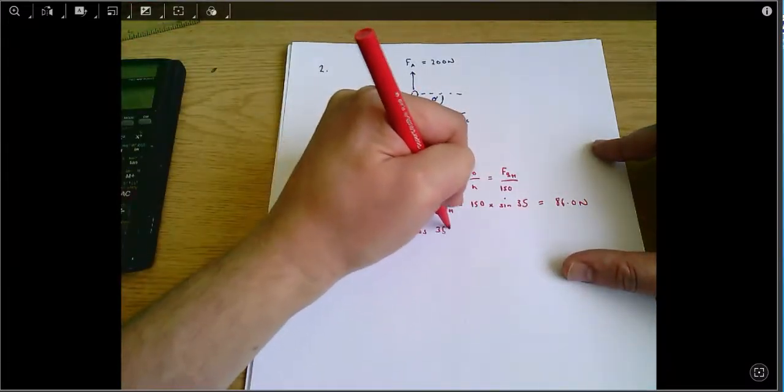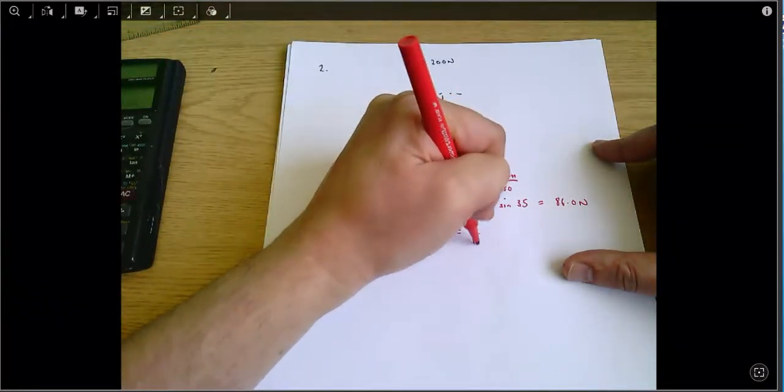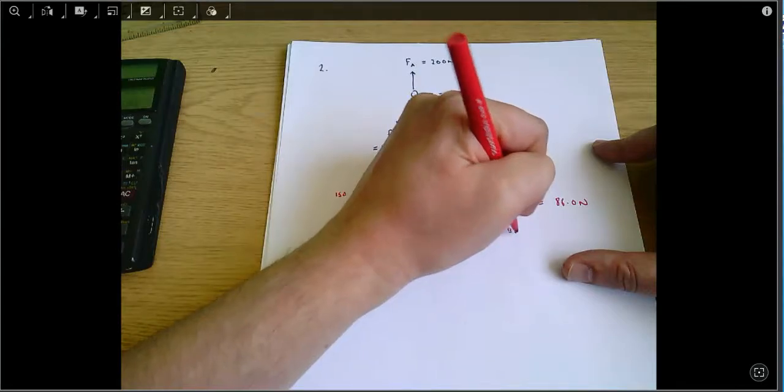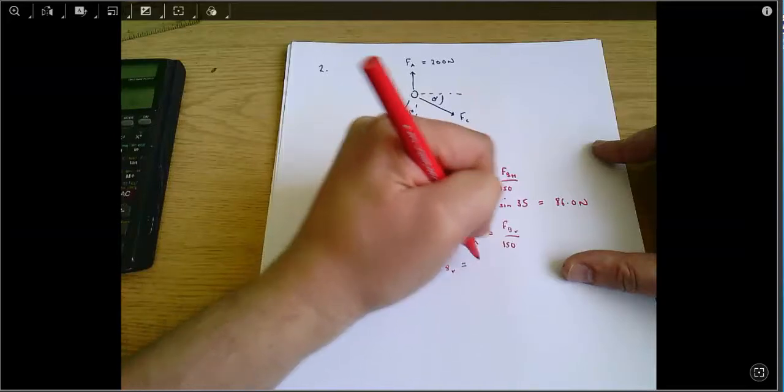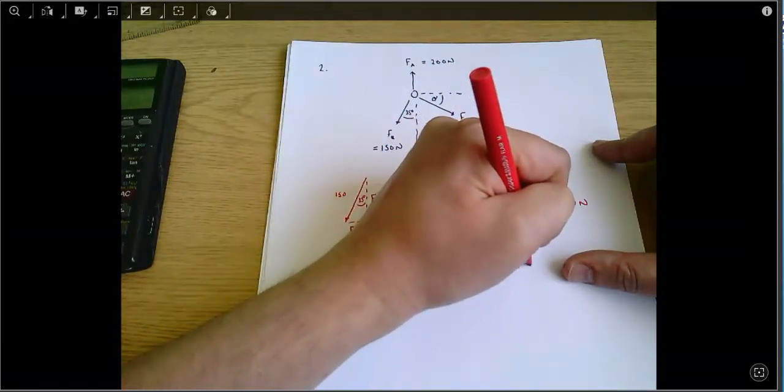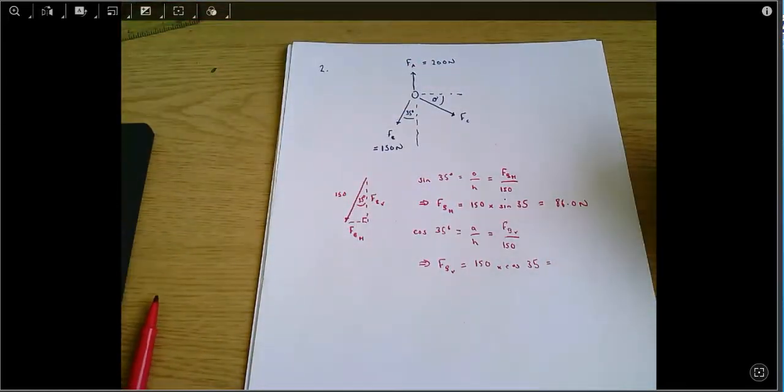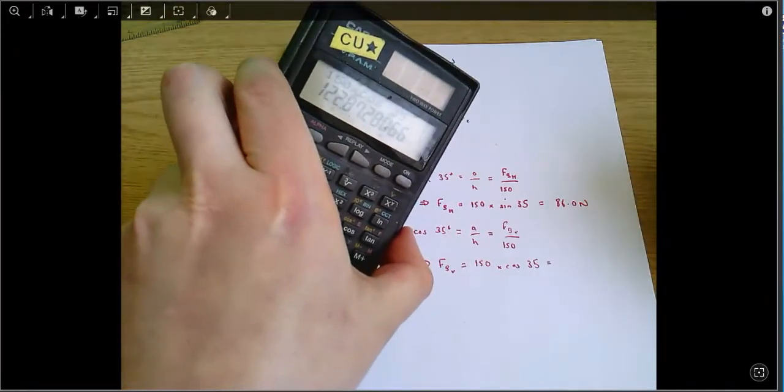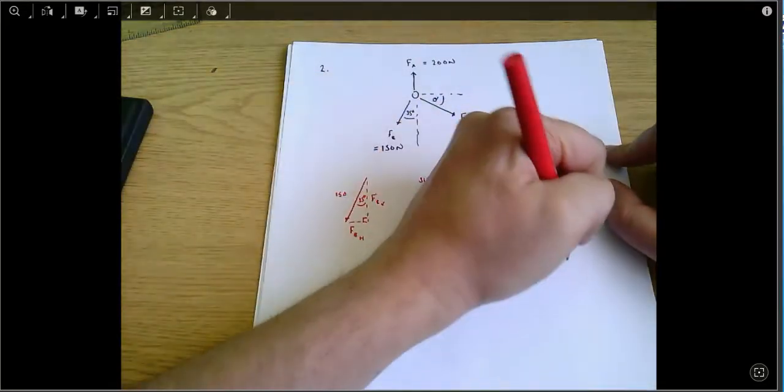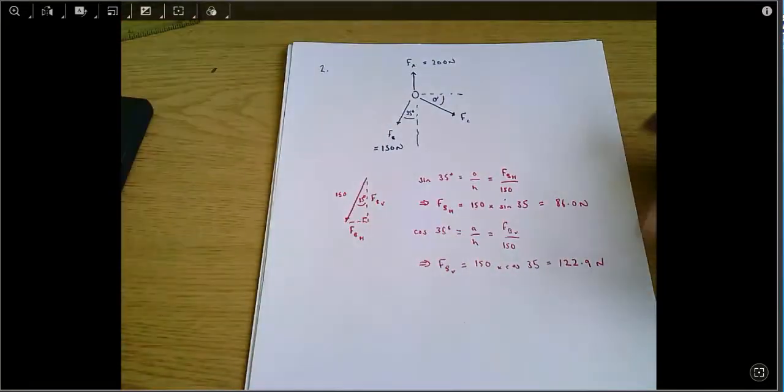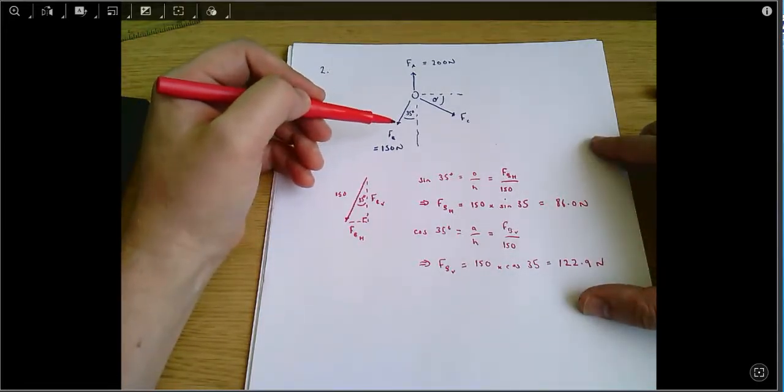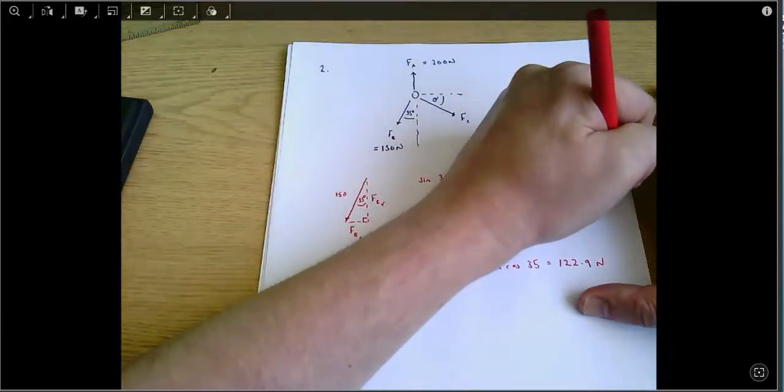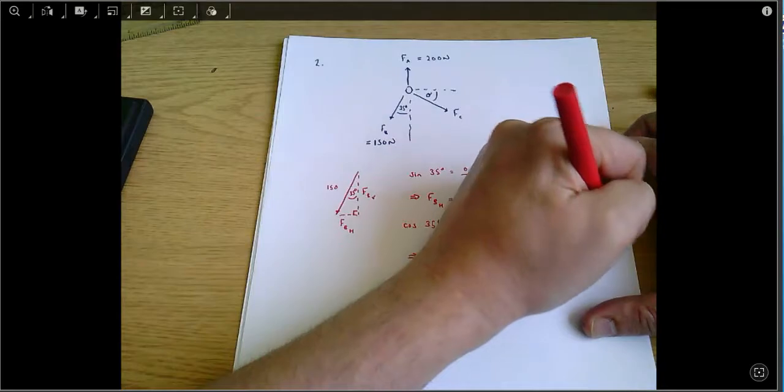Cos 35, I need the other side, so this time we'll use cos. That's adjacent over hypotenuse, which equals FB, the vertical component, divided by 150. And therefore that vertical component is 150 times cos 35 equals 122.9. And I just want to also think this force FB here is pulling down and to the left. So the horizontal component will be to the left and the vertical component will be down.